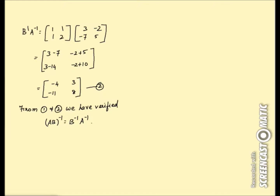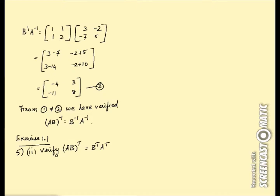For the second subdivision of Exercise 1.1, fifth problem: verify that (AB)ᵀ = BᵀAᵀ. It is pretty simple — we already have AB. We just multiply A and B, then transpose. AB = [[8,−3],[11,−4]], so (AB)ᵀ = [[8,11],[−3,−4]]. Mark this as equation 1.